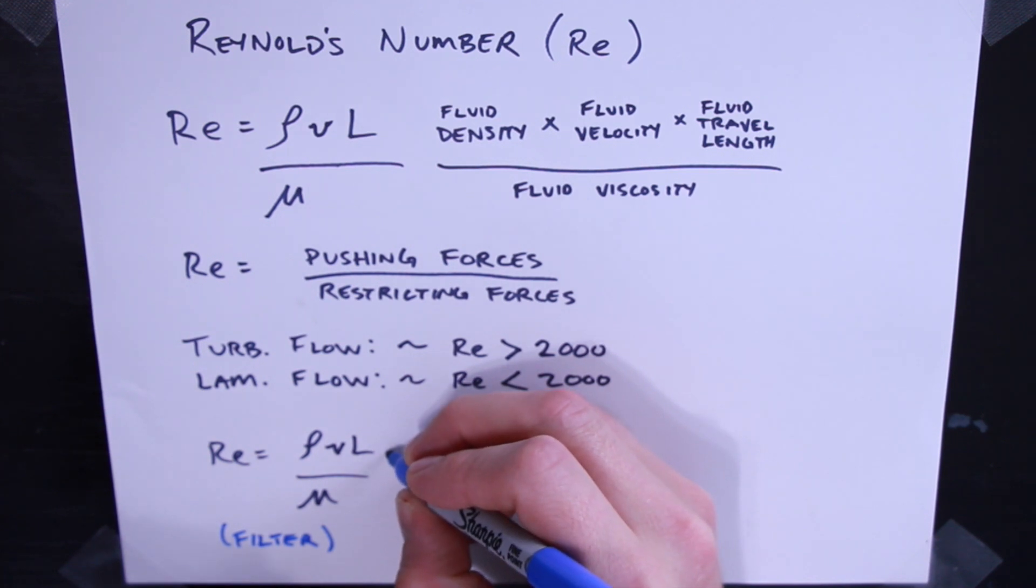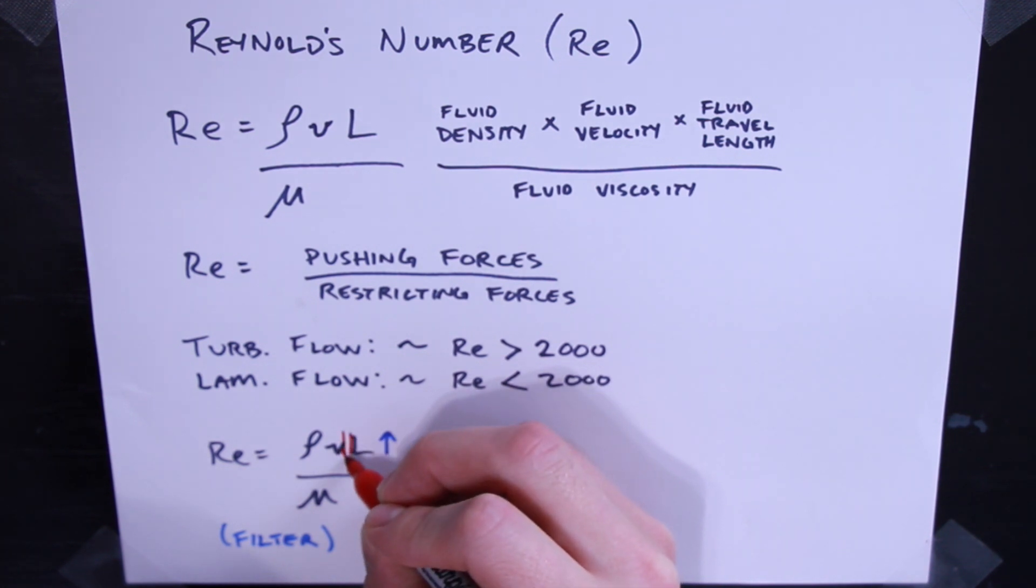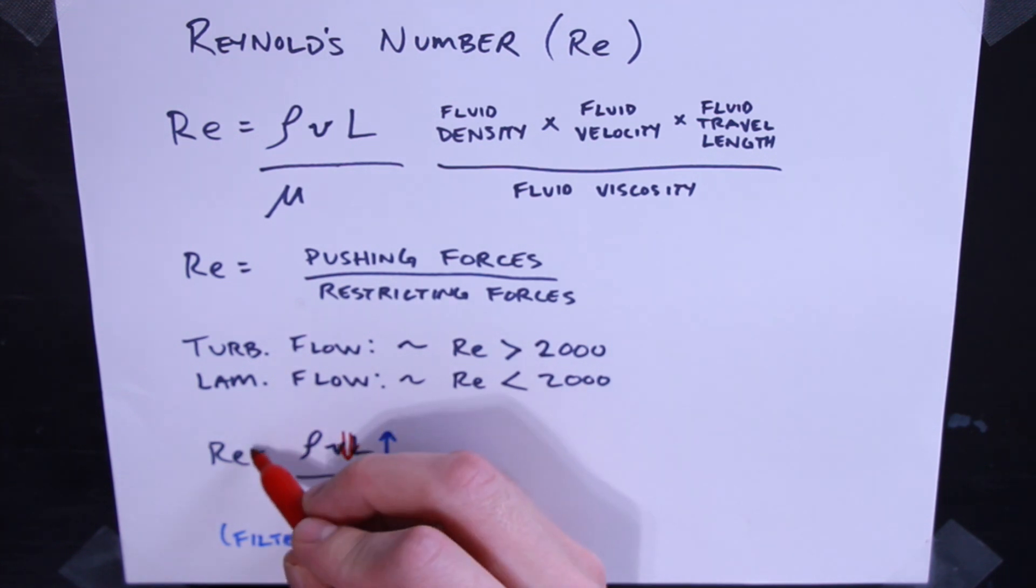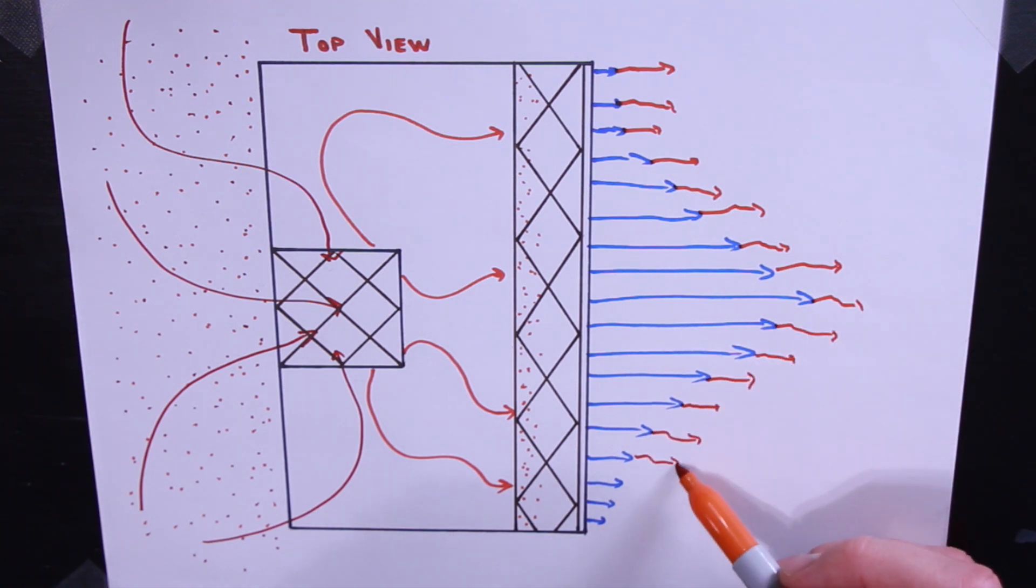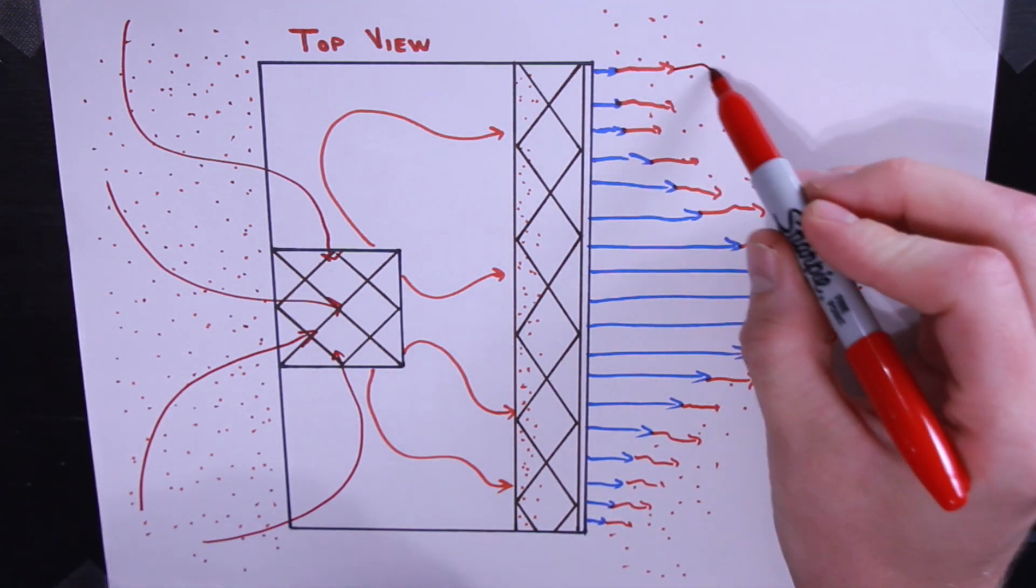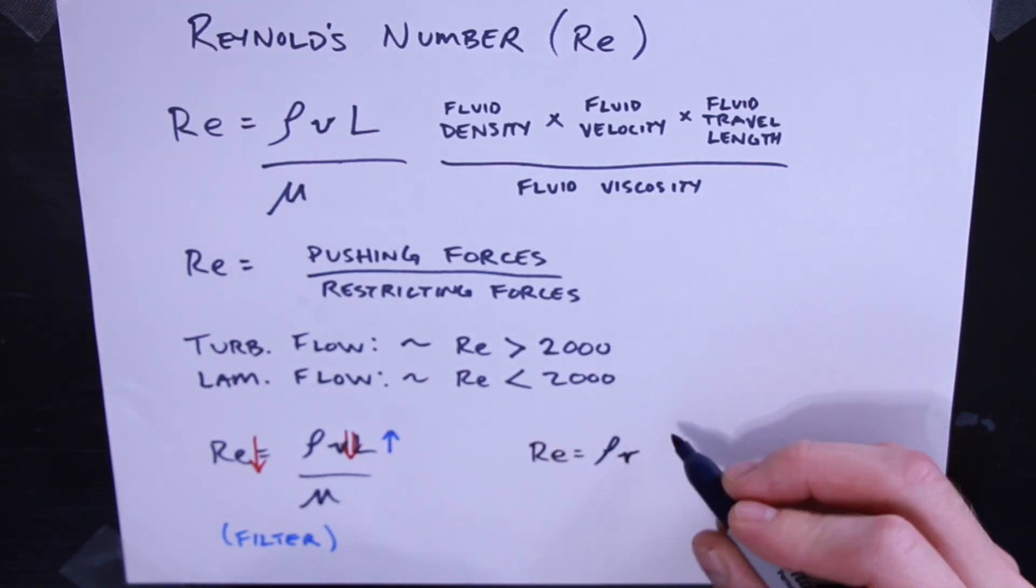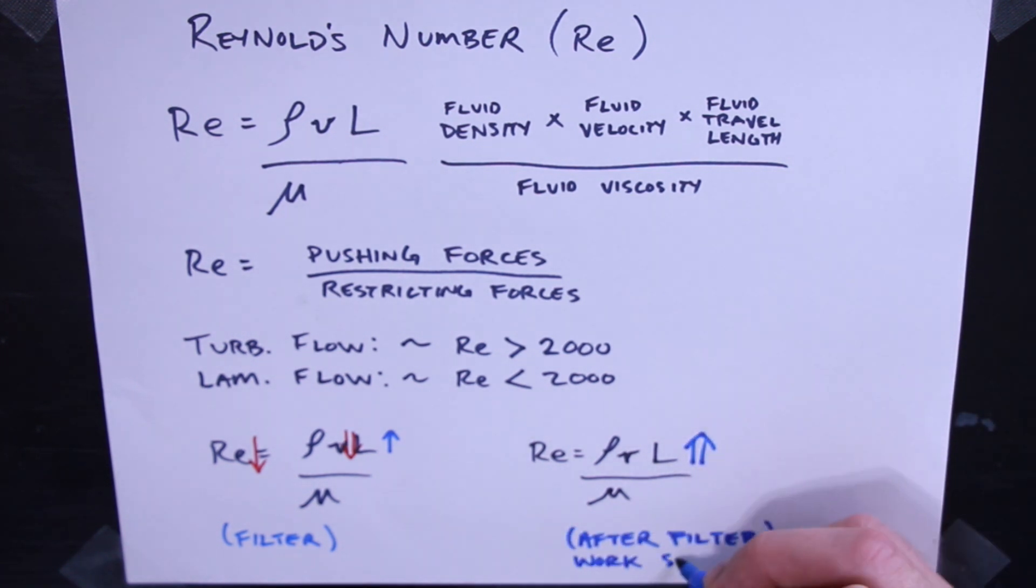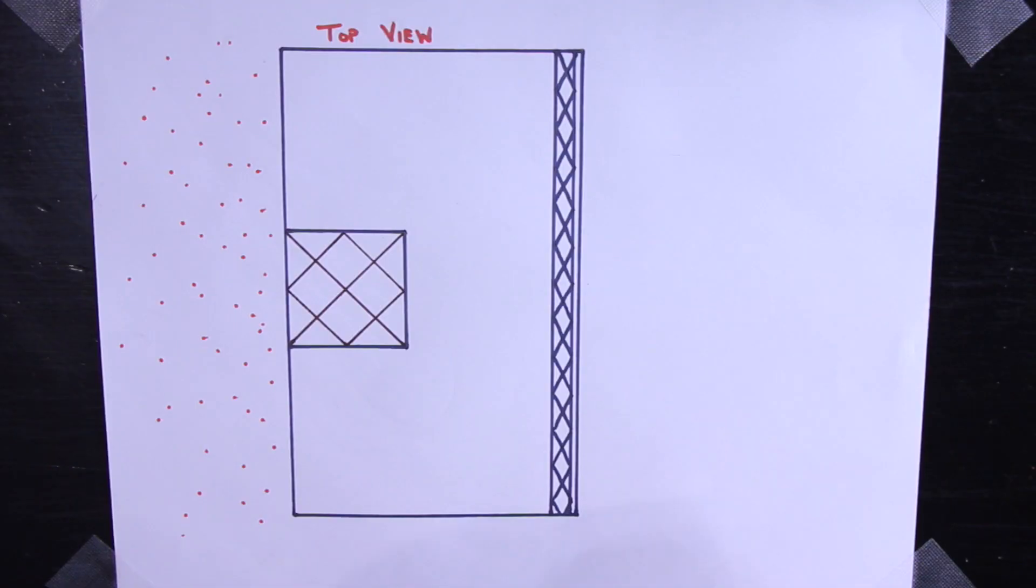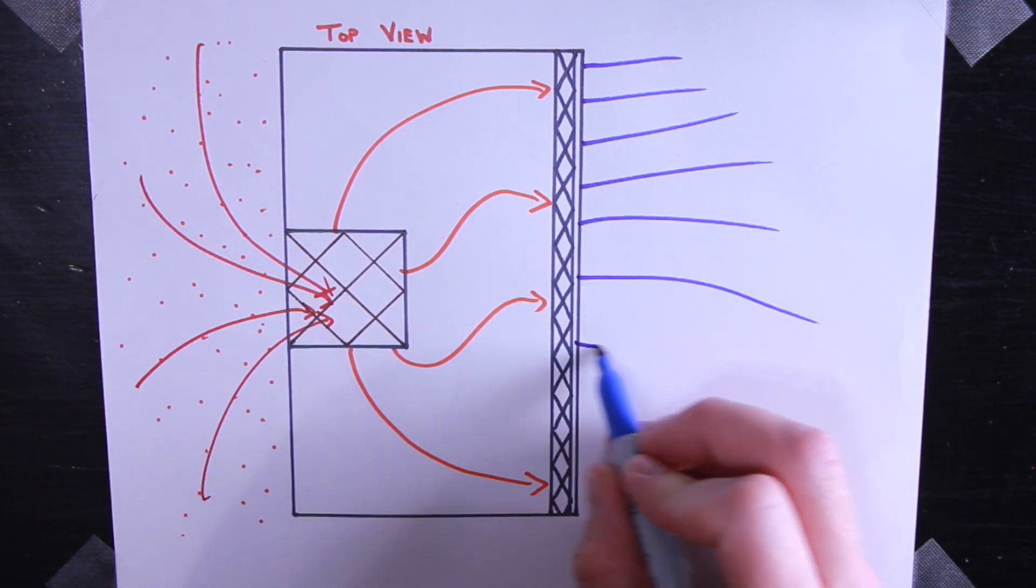As air flows through the filter, the length of fluid travel goes up a little bit, but the velocity of the air slows down quite significantly. This causes the ratio and the Reynolds number to go down, and ideally it goes down to less than 2000 if we've designed our filter correctly. Fluid density and fluid viscosity are not going to change as air flows through the hood. As air continues to travel after it exits the hood, the length of fluid travel goes up quite a bit. But since there's less restrictions, the velocity of the fluid is going to go down very slowly. This causes Reynolds number to go up and our once laminar flow becomes turbulent.